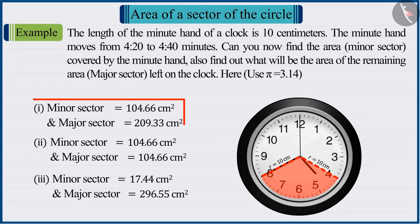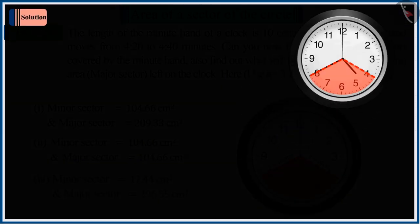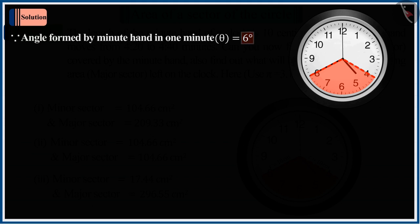Let's discuss option 1. We know that the angle formed by the minute hand in 1 minute is 6 degrees. And here, it says that the minute hand moves from the 20 mark to 40 minutes, which means that it covers a total of 20 minutes.